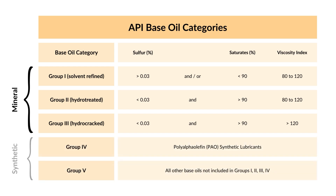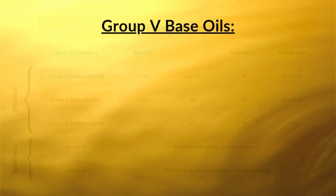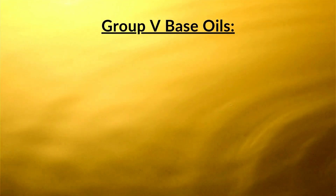Synthetic base oils are categorized as Group 4 and Group 5. Group 4 base oils are polyalphaolefins (PAOs), manufactured by polymerizing alpha olefins in the presence of ethylene gas and a catalyst. They demonstrate desirable properties such as low-temperature fluidity, higher viscosity index, hydrolytic stability, and compatibility with mineral oils and most additives.